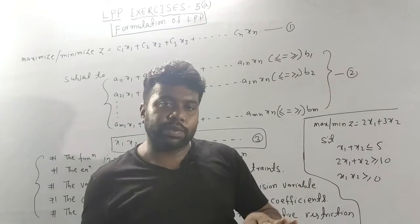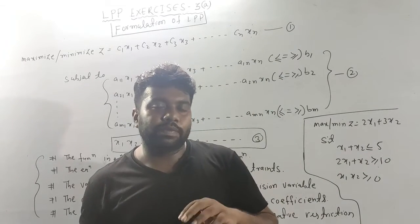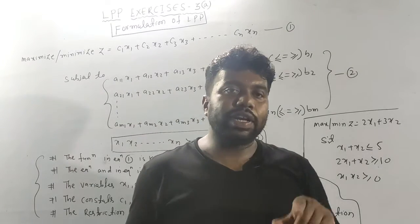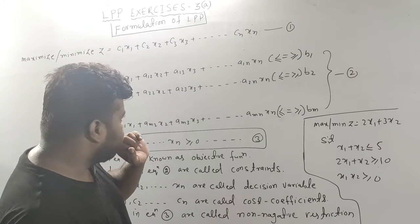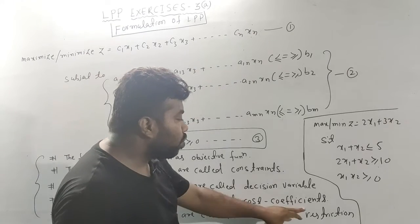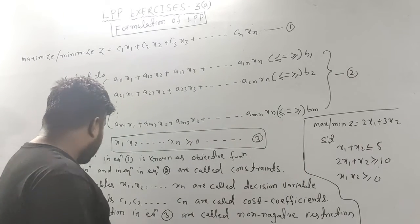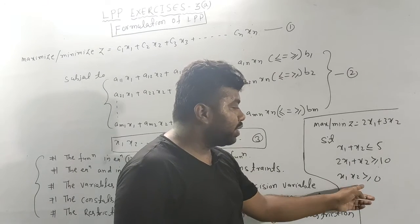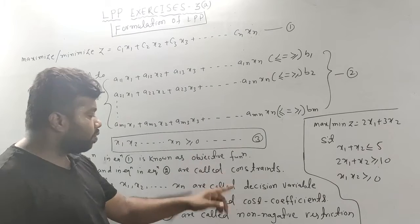The variables x₁ and x₂ are called decision variables, because the objective function will be maximized or minimized depending on x₁ and x₂. The constants c₁, c₂, c₃ are called cost coefficients. The last equation, x₁, x₂ ≥ 0, is the non-negativity restriction.